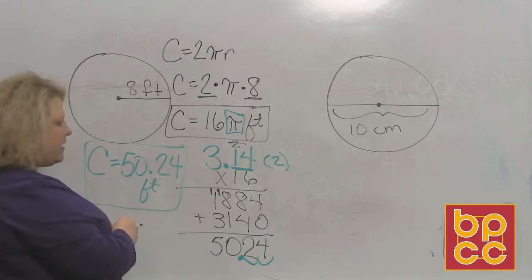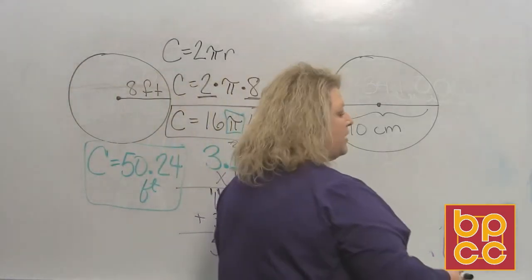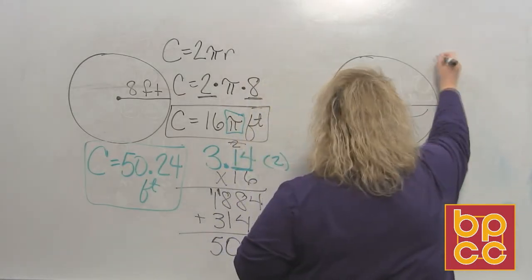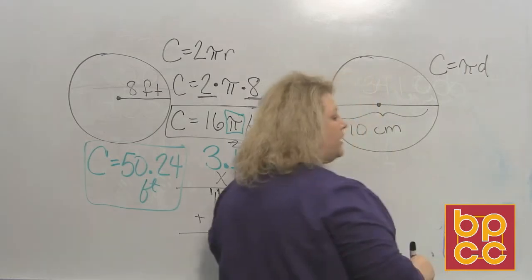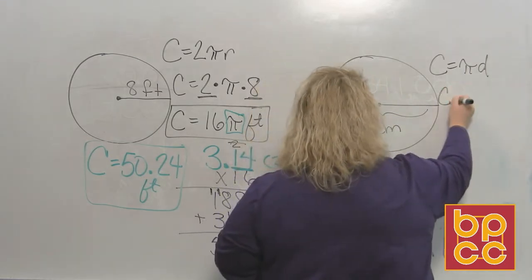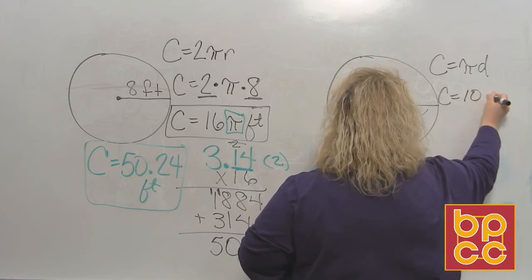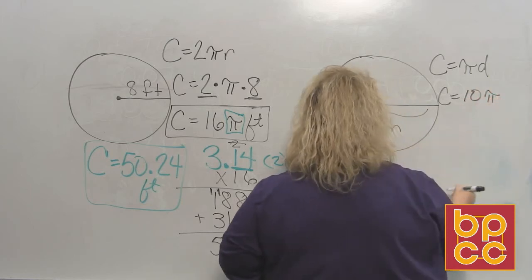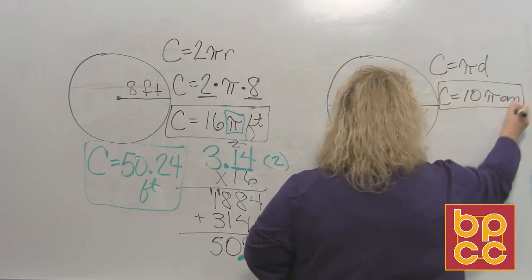Now, let's do one that has the diameter. It's the same process, just a different formula. Circumference is equal to pi times the diameter. So we have circumference is equal to the diameter, which is 10, times the pi symbol. That is the exact answer, and it's centimeters.